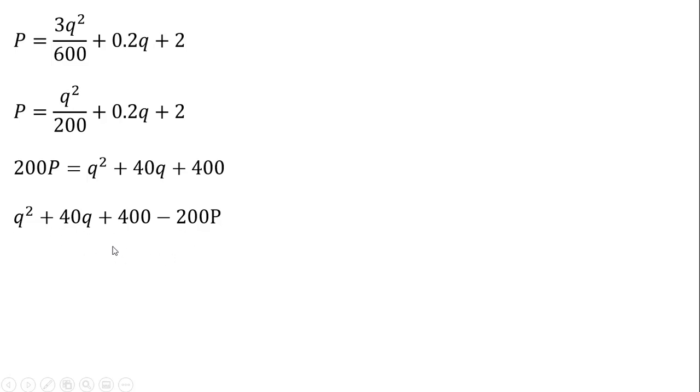So this is going to be a quadratic equation where A, the coefficient on the Q squared term is 1, B is 40, and C is everything else, this 400 minus 200P. So we're just going to substitute this A, B, and C into our quadratic formula.